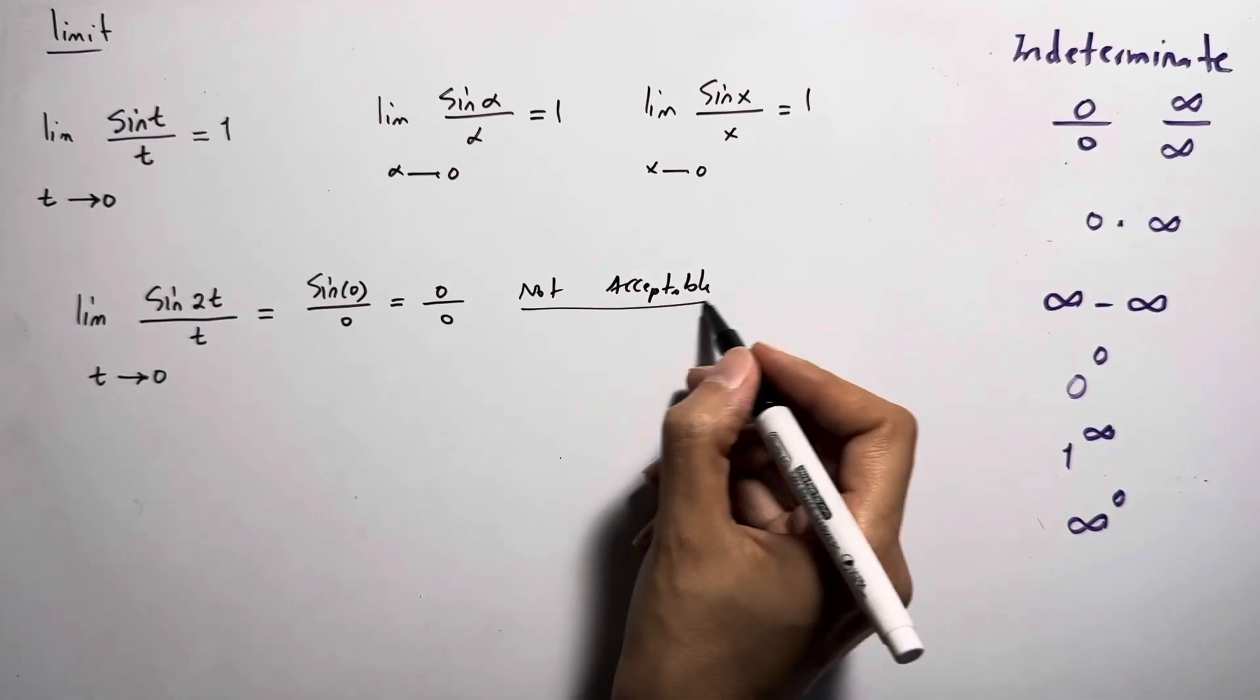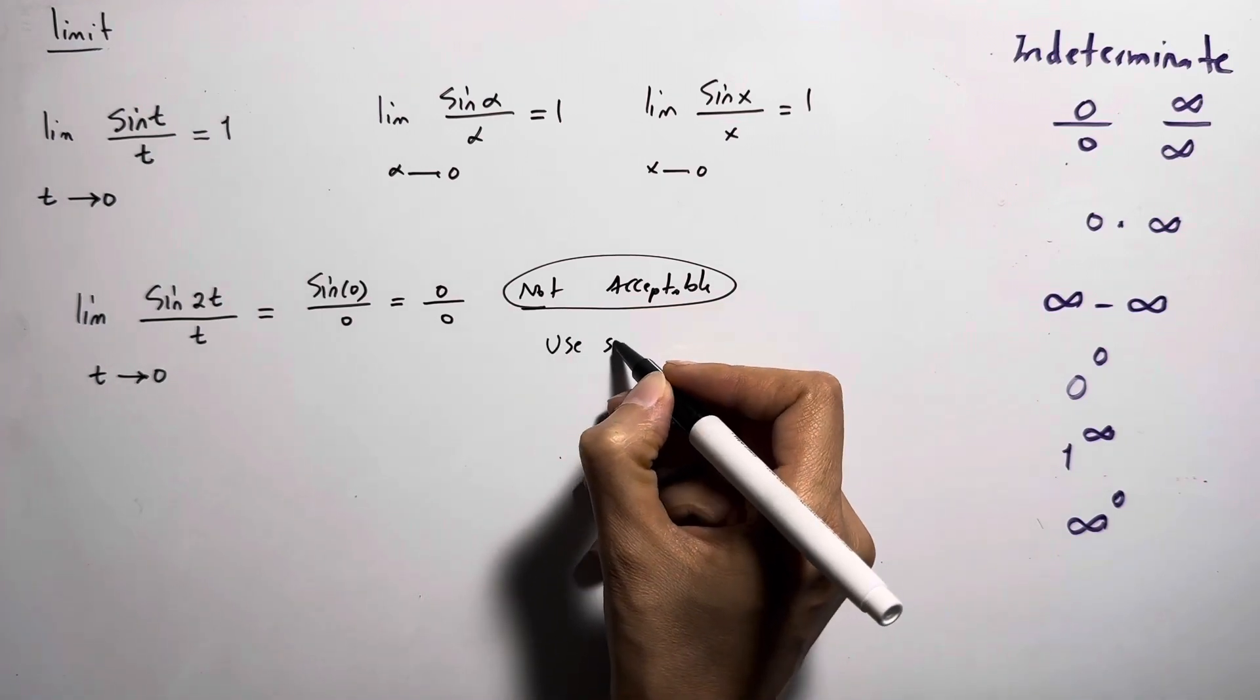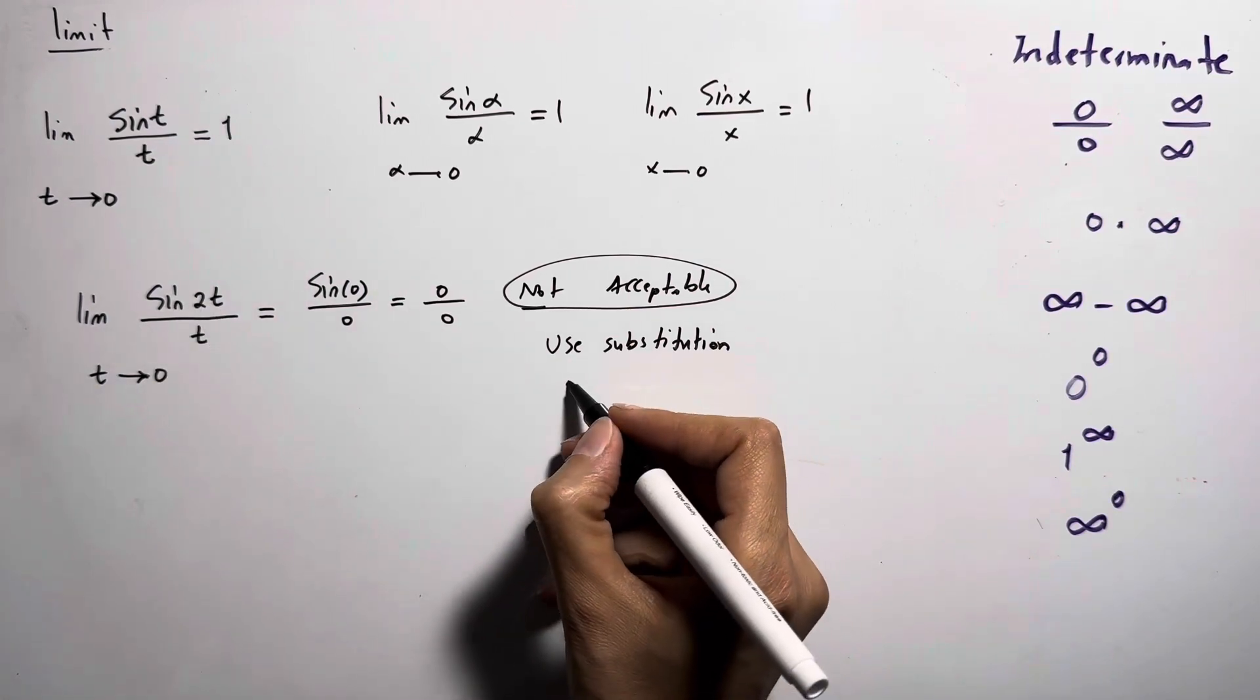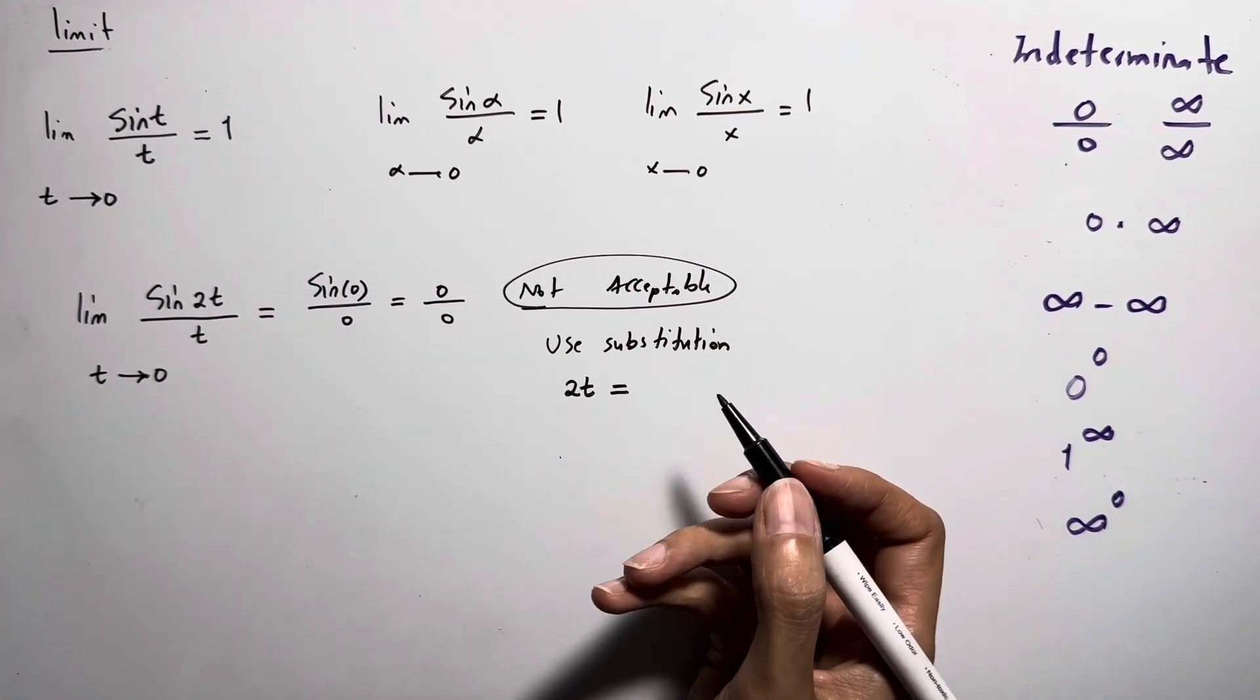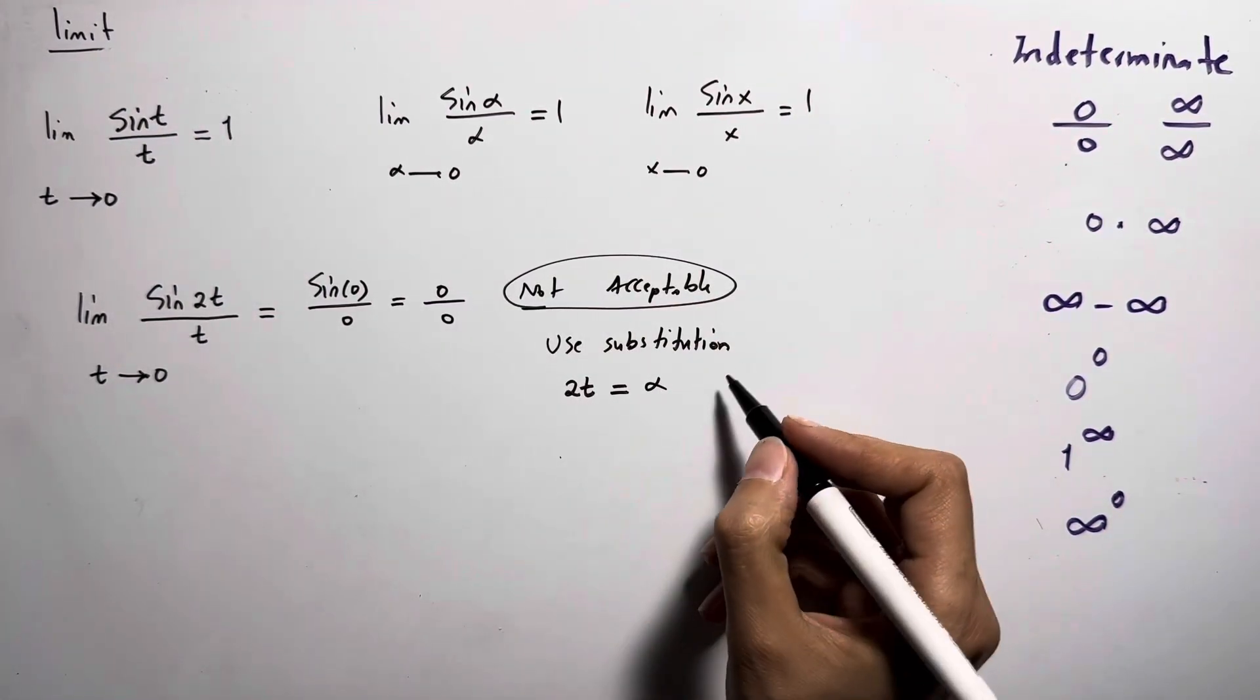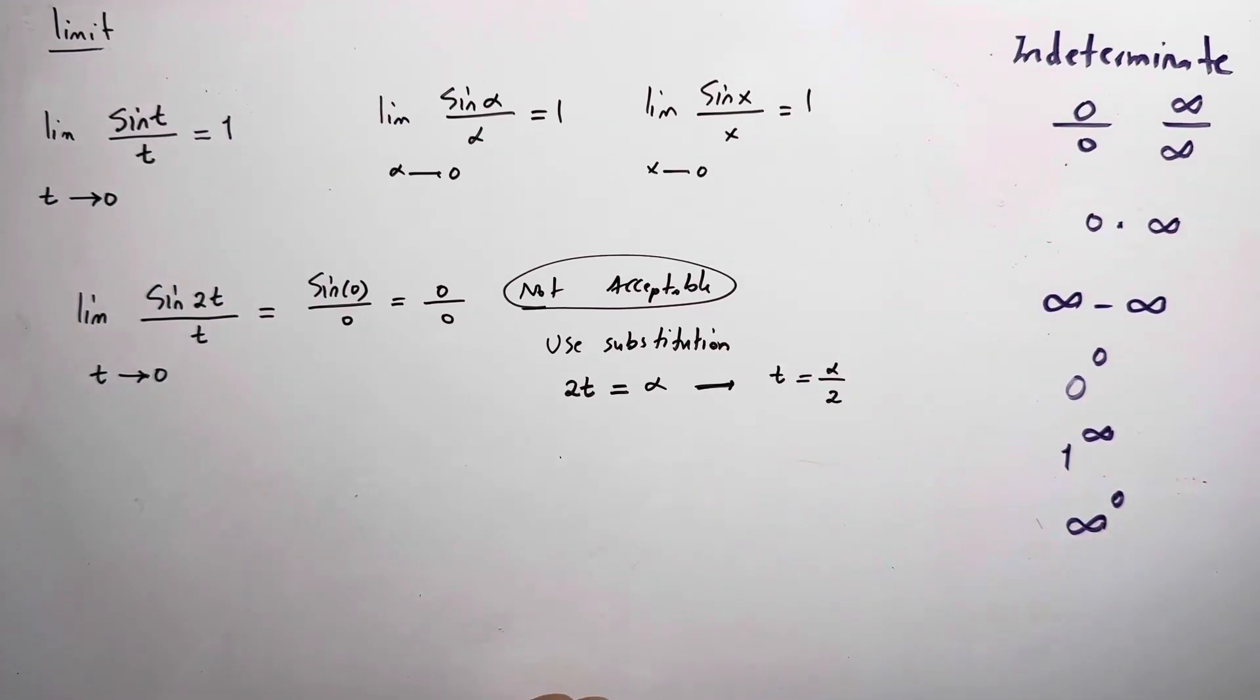So what we can do instead is use substitution. We're going to recall 2t and define a new variable like alpha. 2t is equal to alpha, so t can be written as alpha divided by 2.